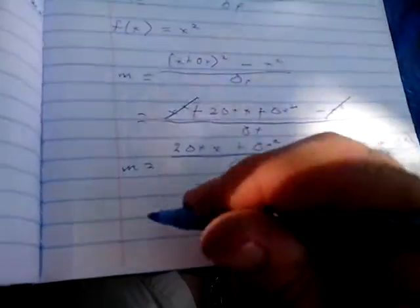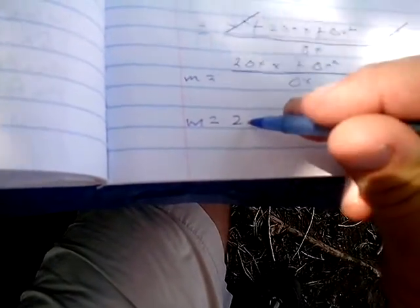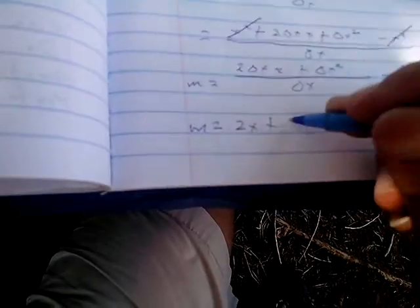The delta x's drop out. Now, you've got a general slope for a parabola in which you've got a slope between two points, which is the formula, which is two x plus delta x.